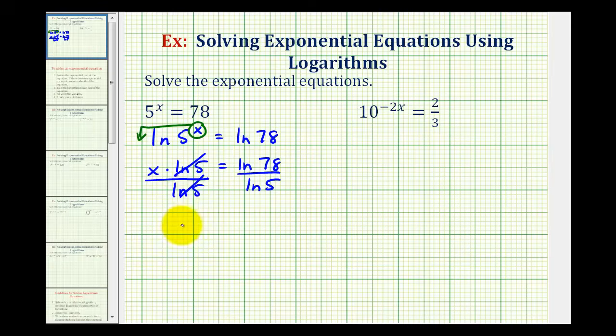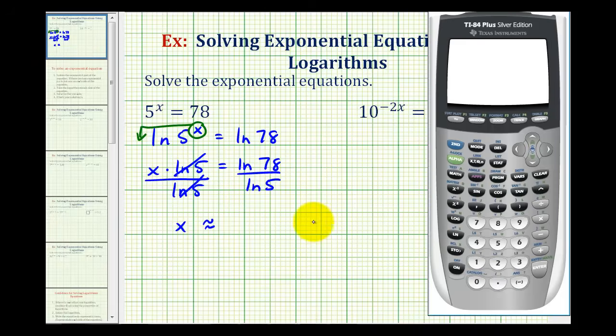This simplifies to 1, so we have x equals this quotient which we will have to round. So now let's go to the calculator, and we'll type in natural log 78 divided by natural log 5. It's typical to round to four decimal places, so if we round to four decimal places, this would be 2.7070.